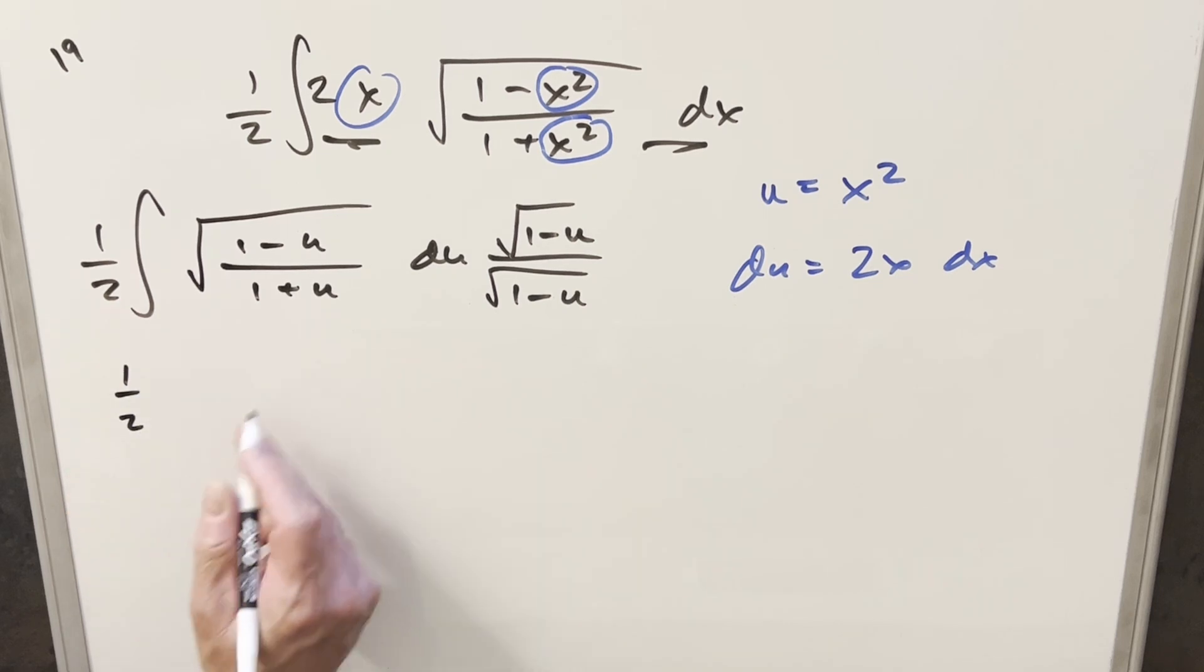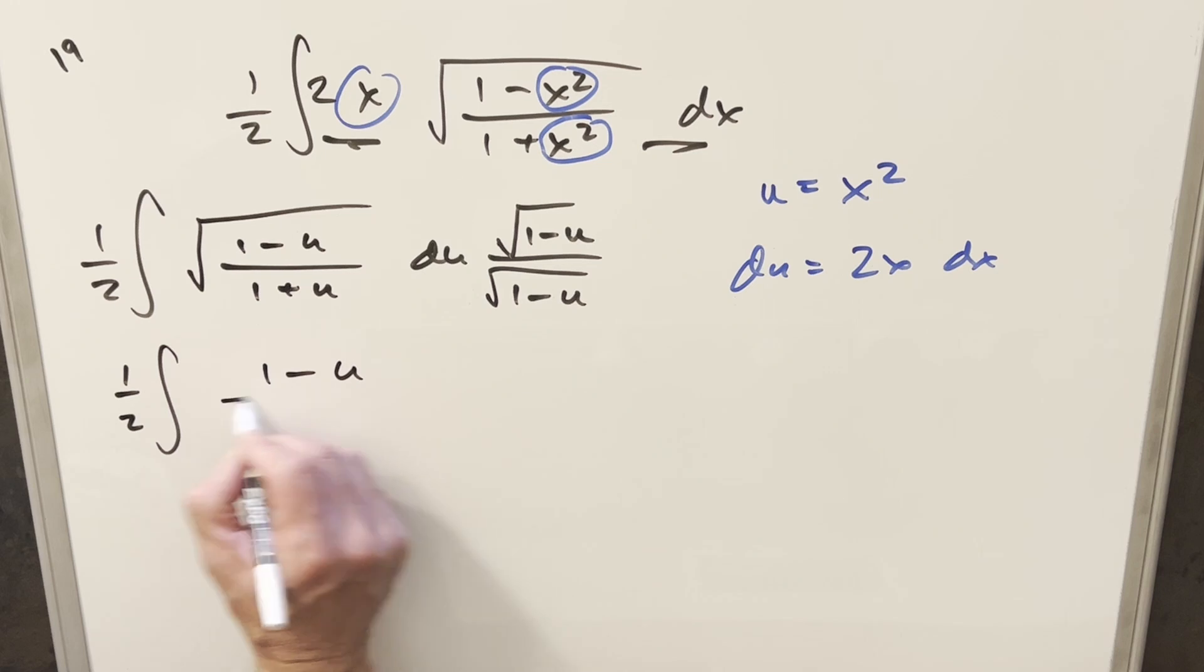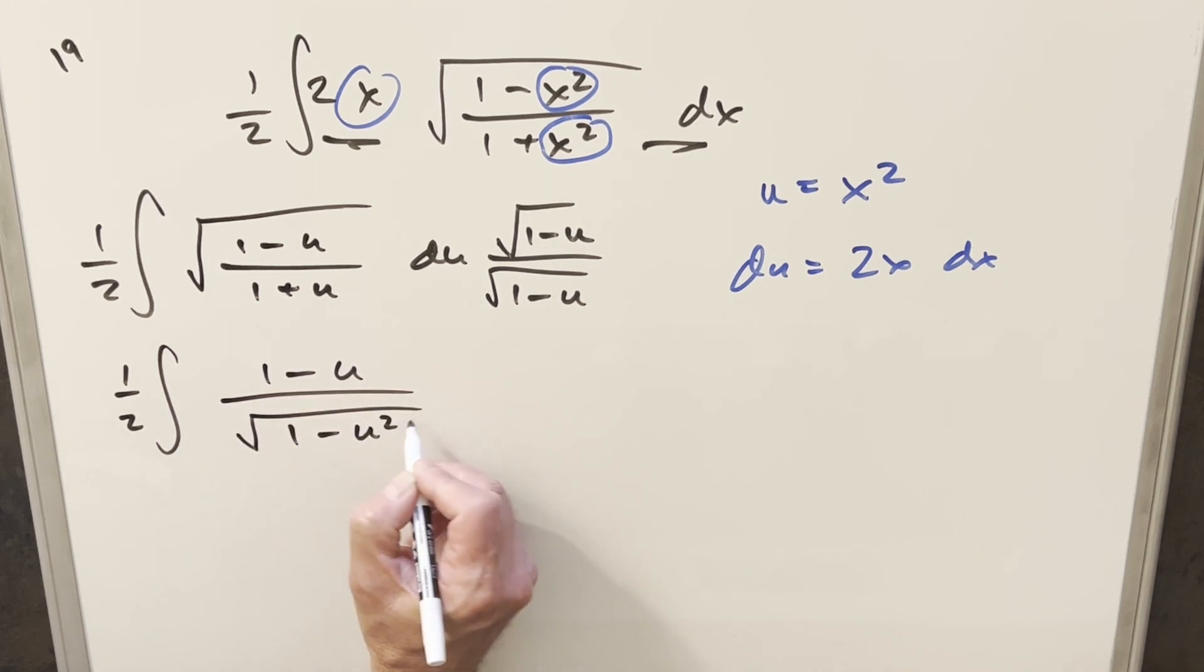Then when we do that, we're going to end up here in the numerator, it's going to have 1 minus u squared inside the square root. So I'm going to just write that as 1 minus u. And then in the denominator, it's going to become 1 minus u squared.